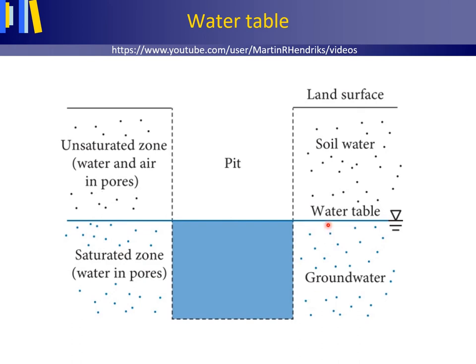A water table that can establish itself freely is by definition the level at which the pore water pressure in the ground equals the air pressure of the overlying air.